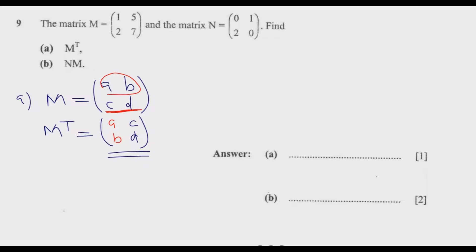So now given that this is M, M transpose becomes: the first row becomes the first column, so we have 1, 5, then the second row becomes the second column which is 2, 7. If you notice, A and D do not change their position. It's B and C that swap. So M transpose is (1, 2; 5, 7).